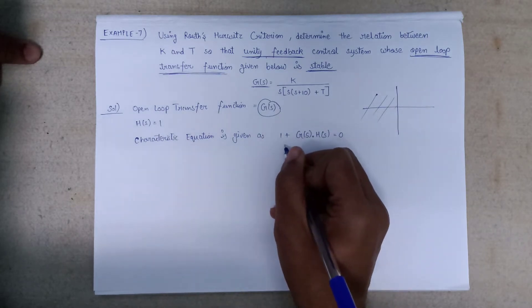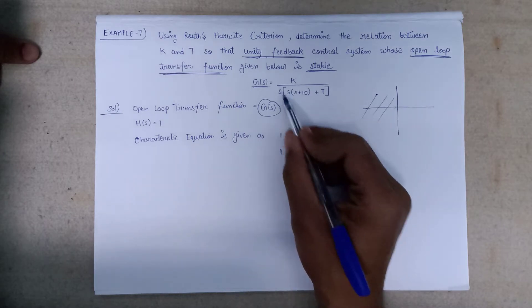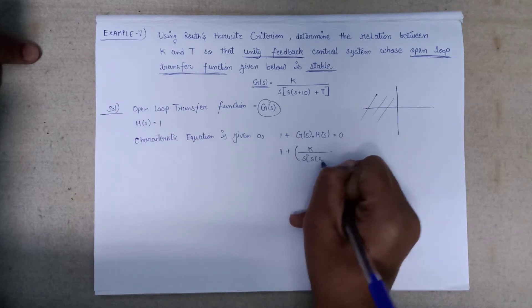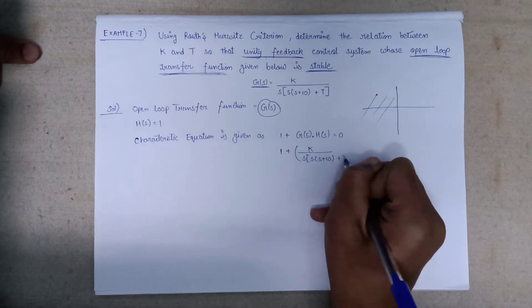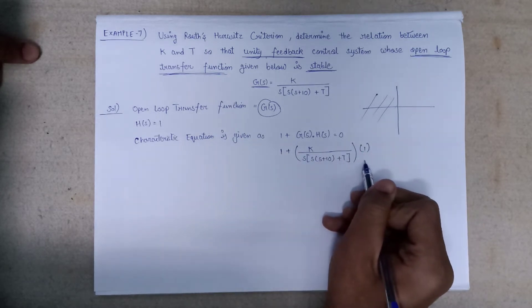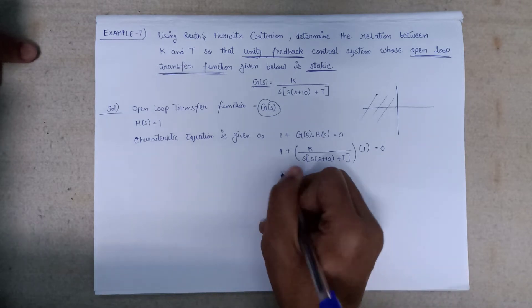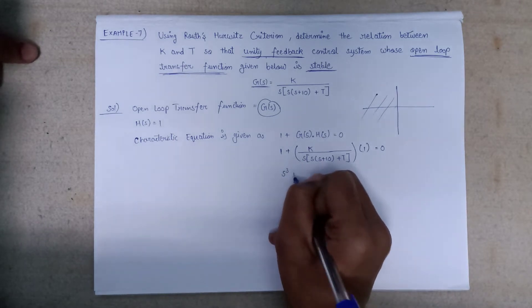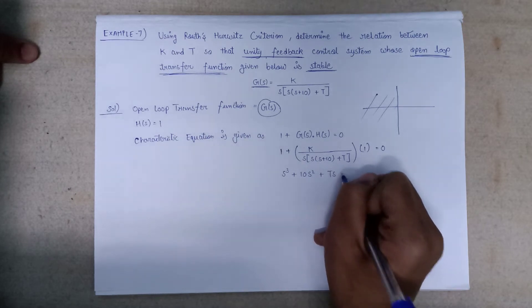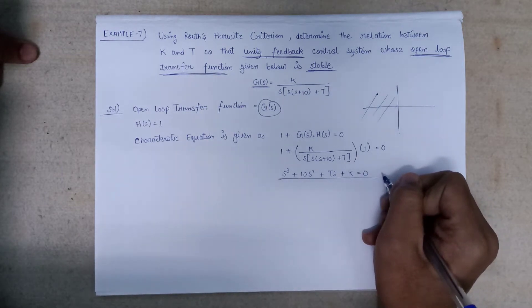Putting the values into the characteristic equation, we get 1 plus k over [s(s + 10 + t)] equals 0, where the whole term is G(s) and H(s) = 1. Taking the LCM, the final characteristic equation becomes s³ + 10s² + ts + k = 0.